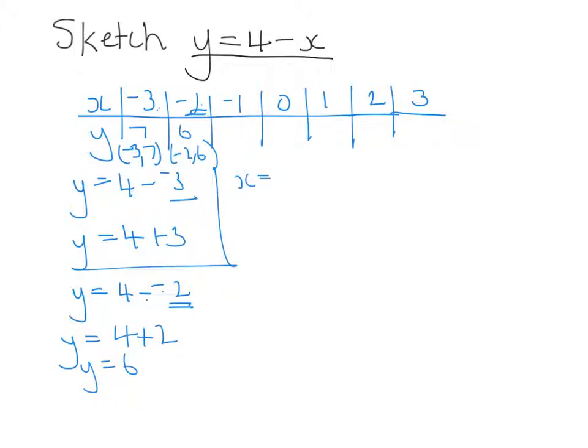Well, what happens if x is equal to minus 1? What would y be equal to? Well, y would be equal to 4 minus negative 1. Now, minus a negative is a positive. 4 plus 1 is 5. So, this would be negative 1, 5.